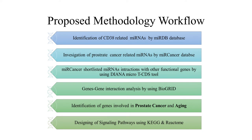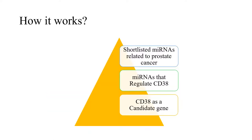Using KEGG and Reactome databases. Here is how it works: first, I selected CD38 as a candidate gene from literature review. After that, I investigated microRNAs that regulate CD38, and in the third step I further shortlisted microRNAs that are specifically related to only prostate cancer.